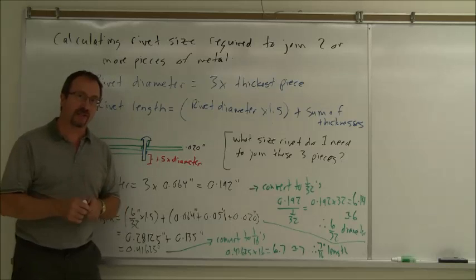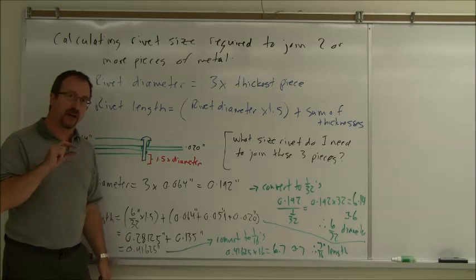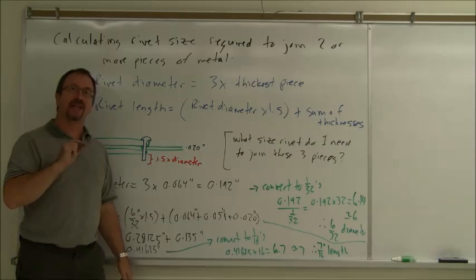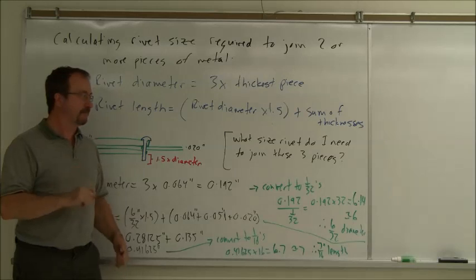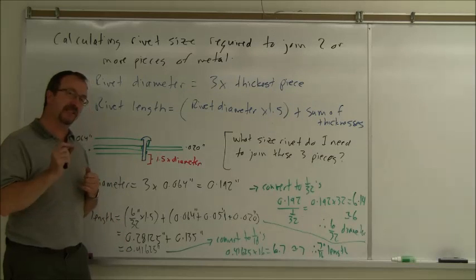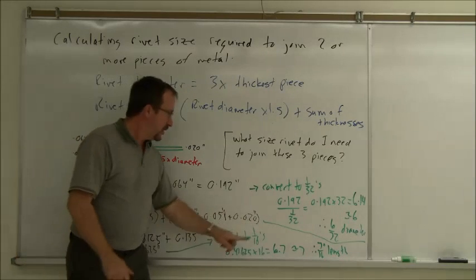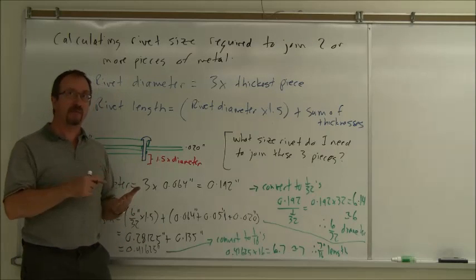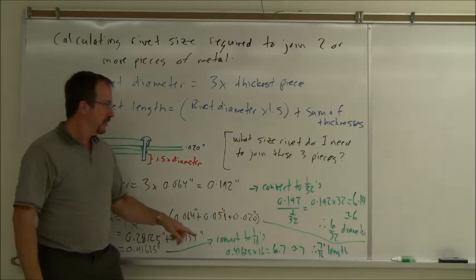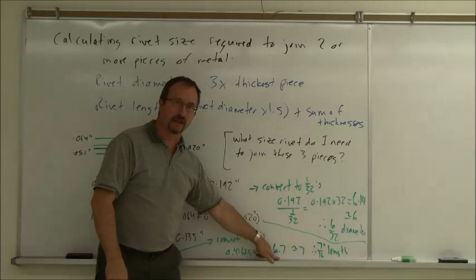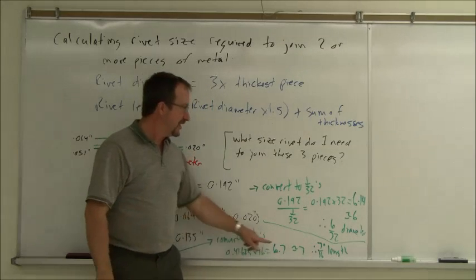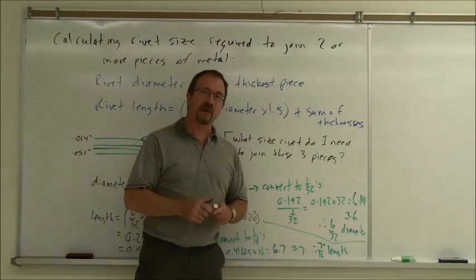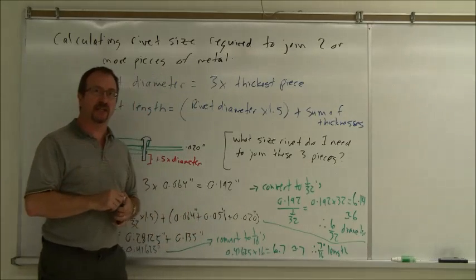But again, I can't go and get a rivet that's 0.41625 inches long. Rivets generally come in 16ths of an inch. So, I have to find the closest 16th. How many 16ths do I have? So, I'll take that 0.41625, again, I divide it by 1/16, which is the same as multiplying by 16. That gives me 6.7, rather the closest whole number is 7. So, the length of my rivet will be 7/16 of an inch.